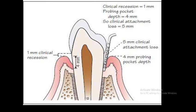Let's look at this picture and learn how to calculate the total attachment loss. Attachment loss is the degree of recession of the gingival margin and the probing depth added together. The recession is measured as the distance from the gingival margin to the cemento-enamel junction — in this case, one millimeter. This is the clinical recession.